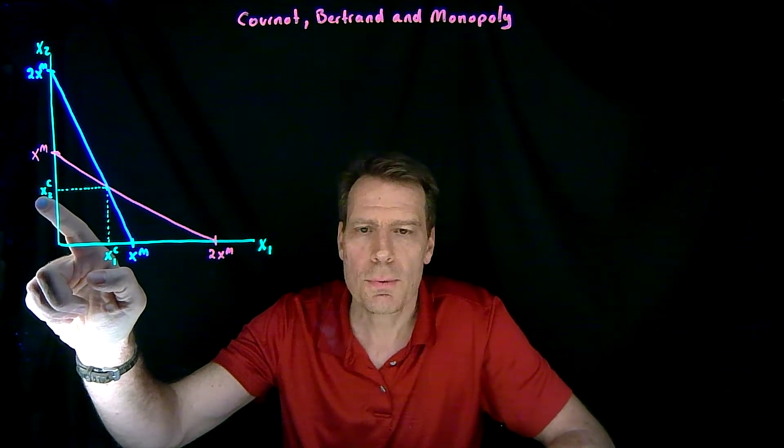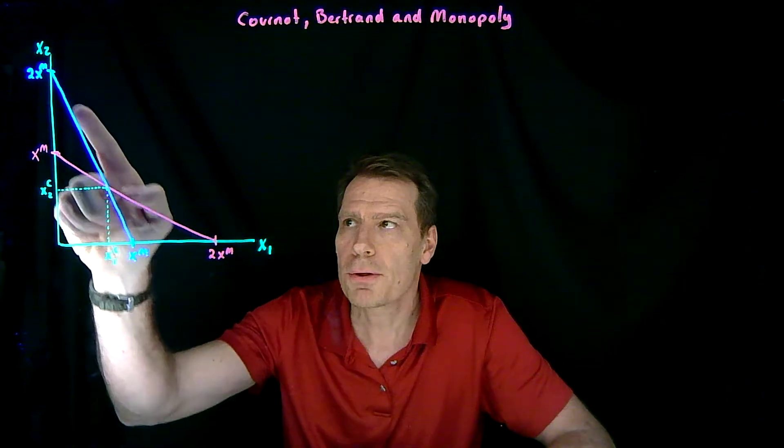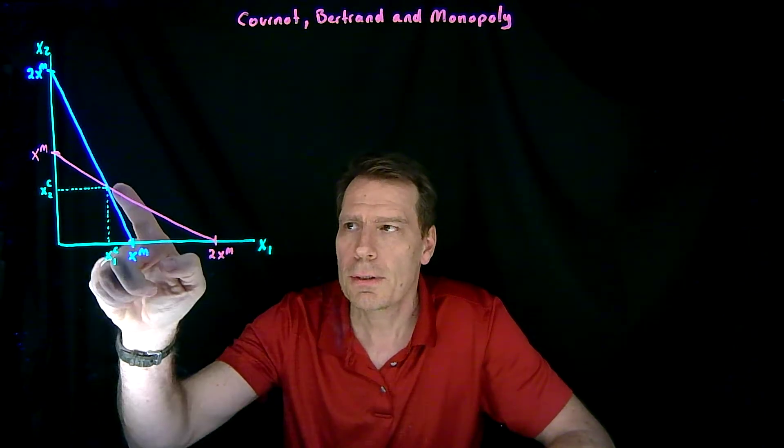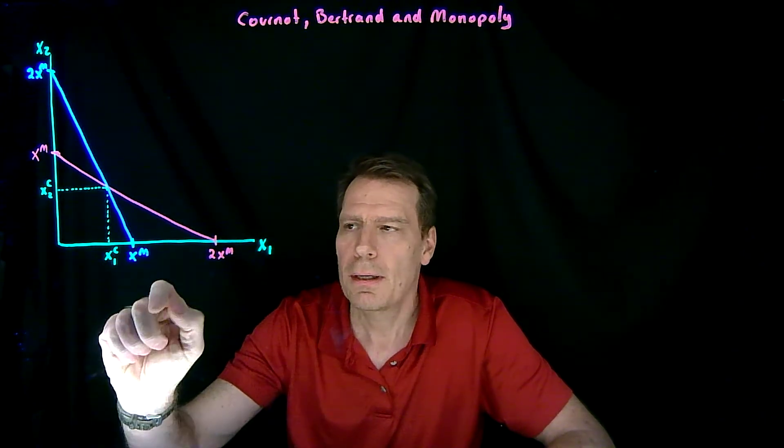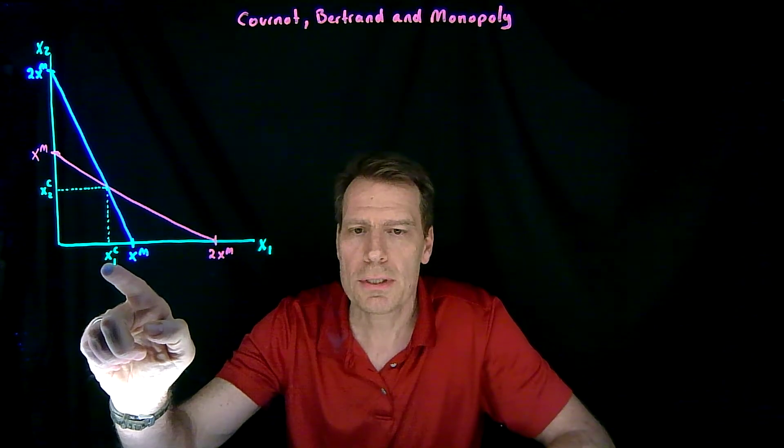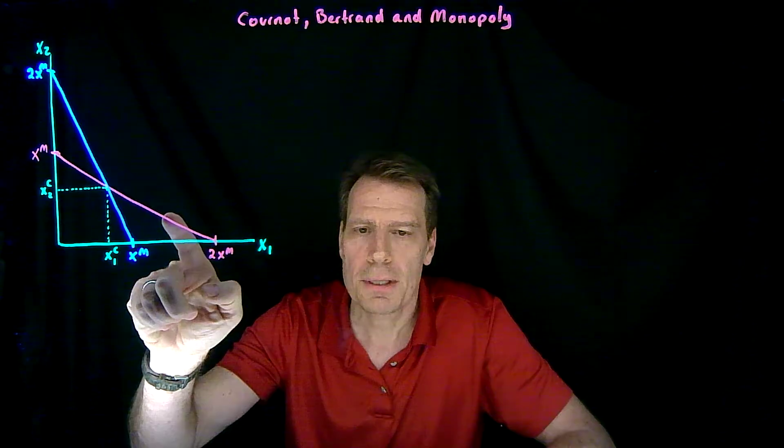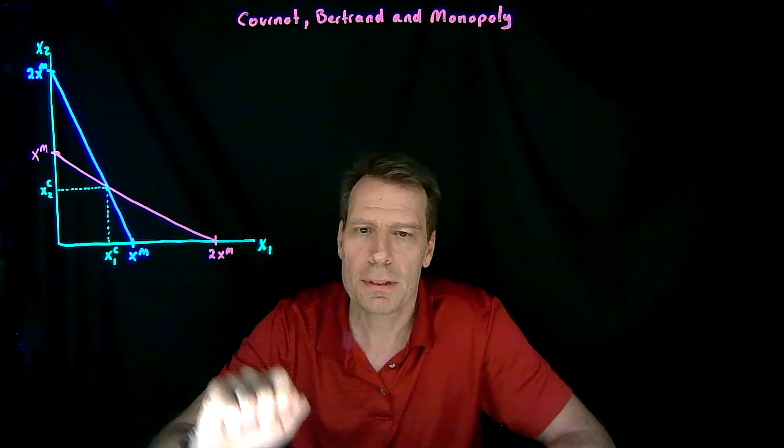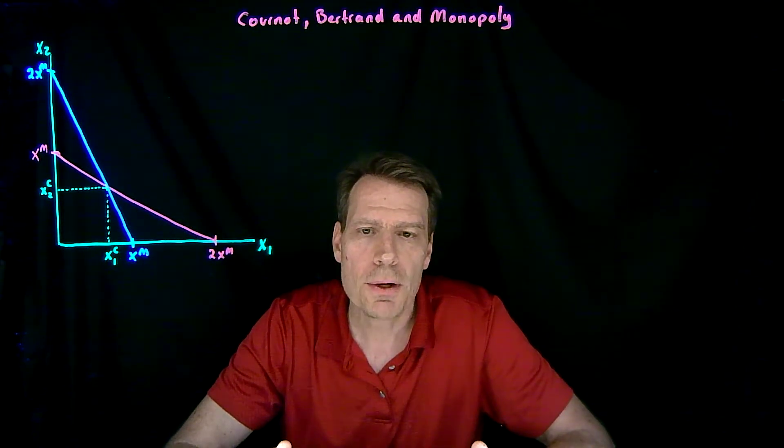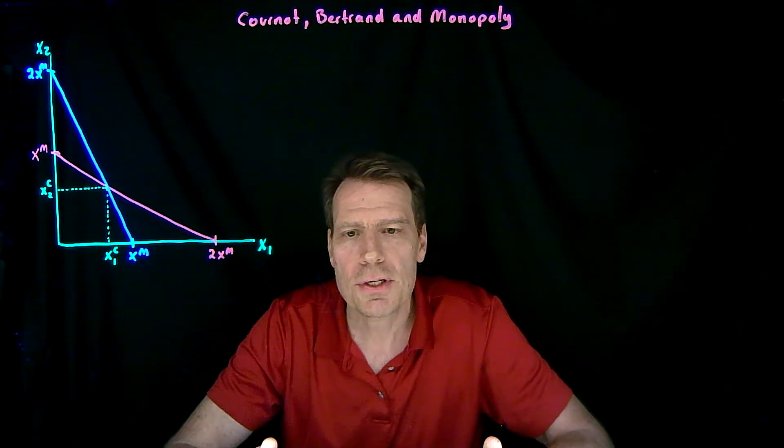If firm 2 produces this quantity, firm 1 best responds on the blue best response function by producing this quantity. And when firm 1 produces this quantity, firm 2 will best respond on the magenta best response function by producing this quantity. So they're best responding to one another in this Nash equilibrium.